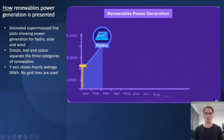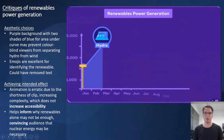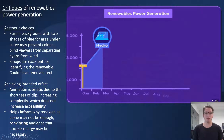This visualization is of renewable power generation in California for 2019. It features three animated line plots superimposed on top of each other and animated asynchronously. Emojis, text, and color are used to separate hydro, solar, and wind power generation, and no grid lines are used in the line plot. The purple background with two shades of blue for area under the curve may prevent colorblind viewers from separating hydro from wind, but emojis are excellent for identifying which renewable is which. Since earlier in the video they explicitly stated which emoji meant what, they could have removed the text from the visualization in my opinion.